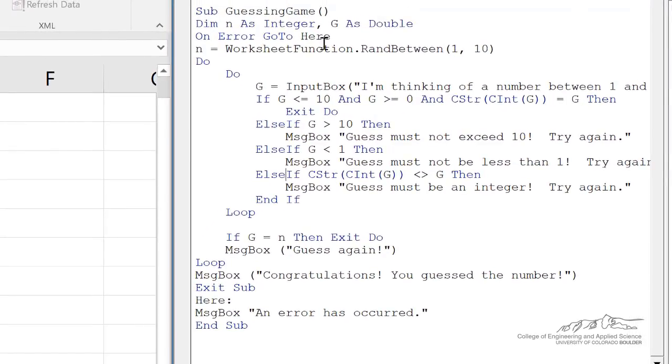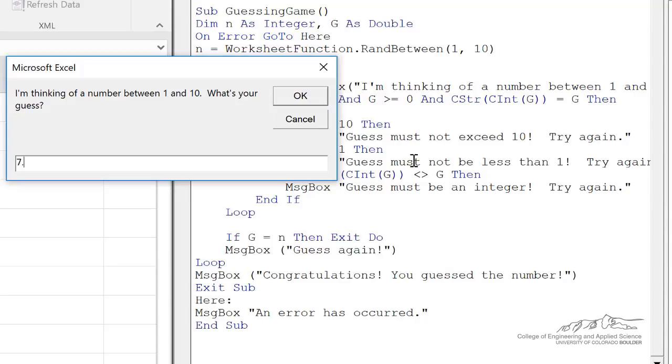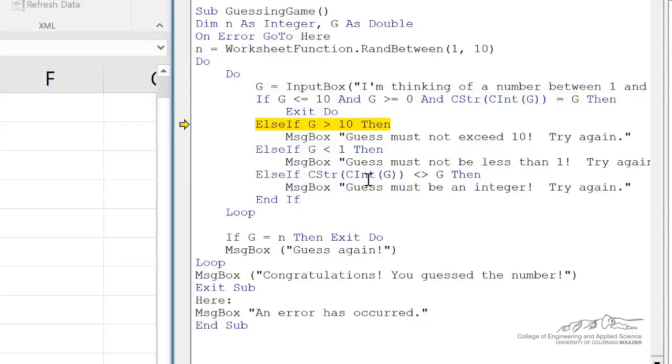So the code worked just fine before we did all this, but it just didn't identify that the user was inputting a non-integer. So let me show you what happens when we run through this. If the user inputs something like 7.5, then all three of these are not satisfied now because the integer part is not equal to G itself.